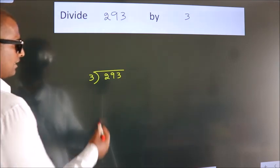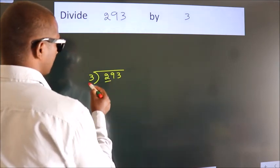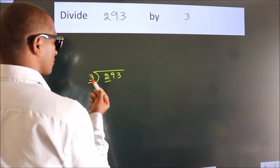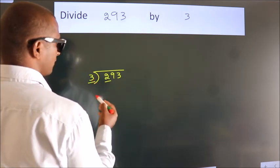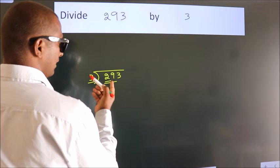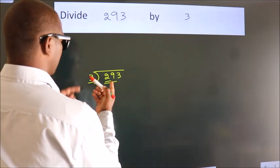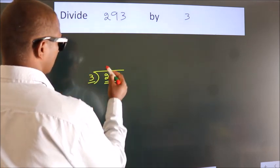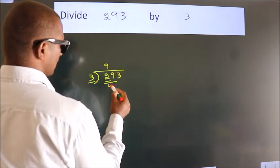Next. Here we have 2, here 3. 2 smaller than 3. So we should take 2 numbers, 29. A number close to 29 in 3 table is 3 nines, 27.